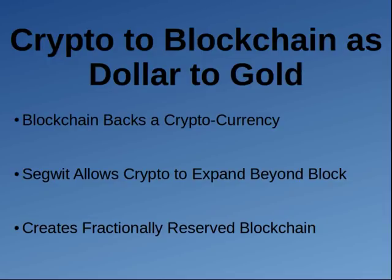With SegWit, you allow the crypto to expand beyond the power and size of the block — more transactions than the block can actually handle. Just like fractional reserves with the dollar and gold: you create more dollars but you don't create more gold. With SegWit's version of the blockchain, you create more crypto and can use it more, but you don't have more blockchain. With Bitcoin SegWit's version of Lightning, you might have 100 transactions done on the Lightning Network but only one transaction closed on the blockchain.